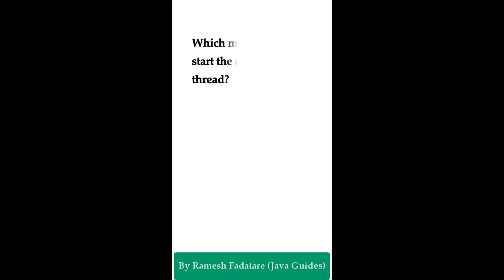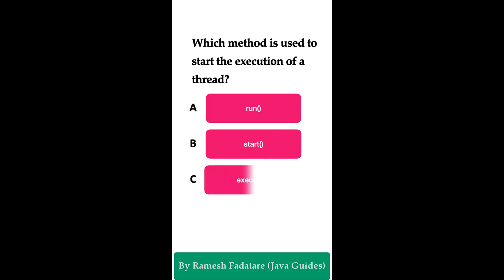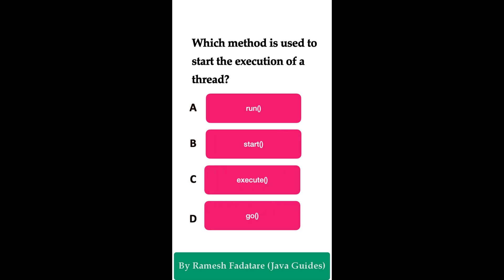Welcome to Java Quiz Series. Here is one more question: which method is used to start the execution of a thread? Option A: run() method. Option B: start() method. Option C: execute() method. Option D: go() method. You have five seconds to answer this question.